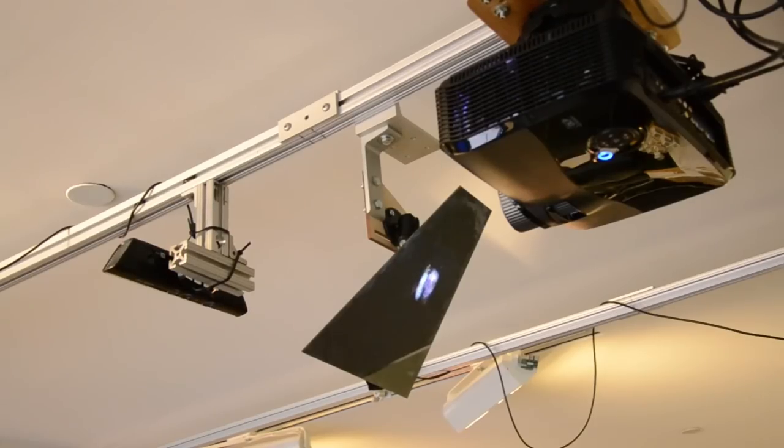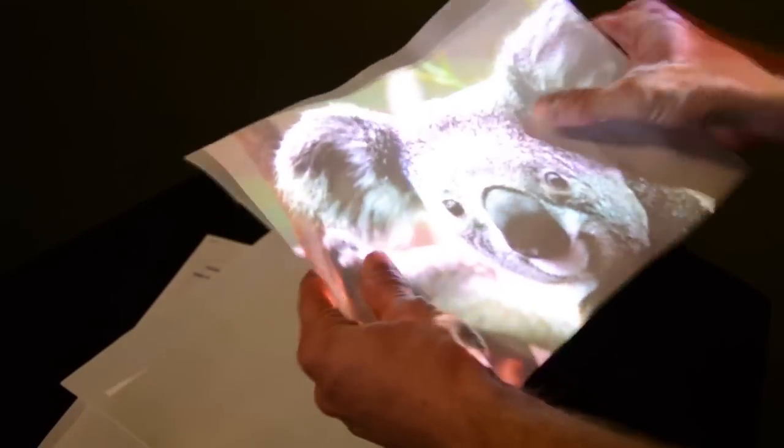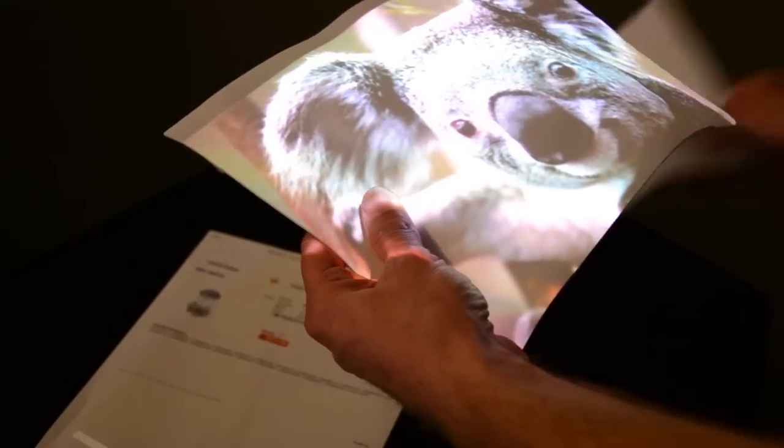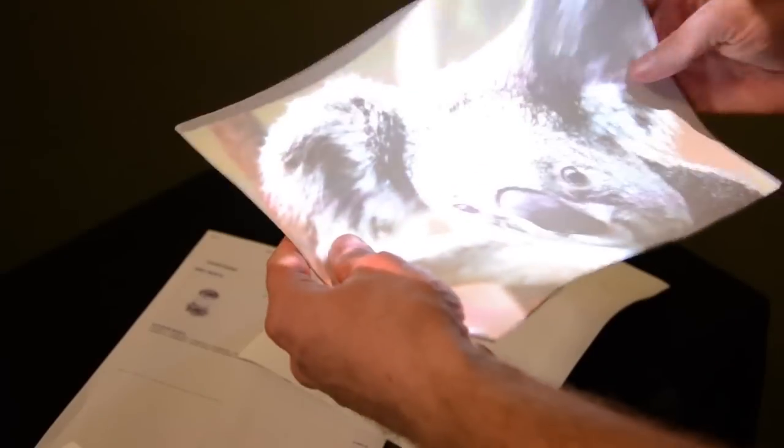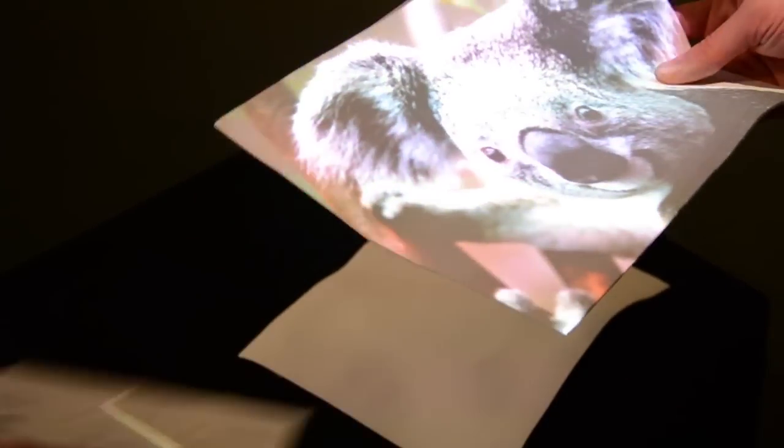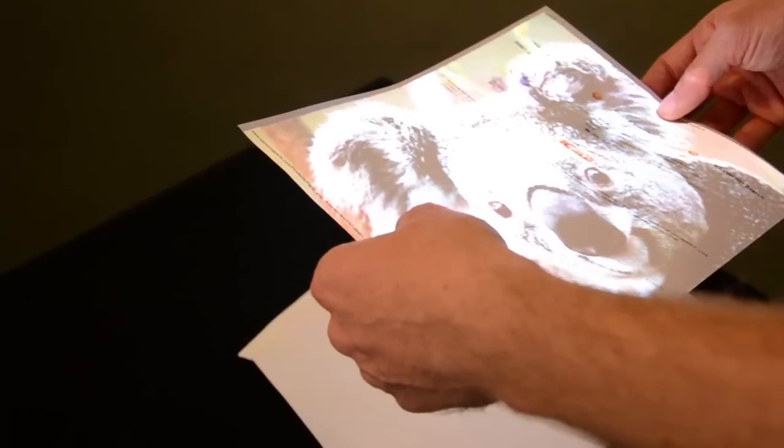It uses a Kinect camera and a projector to transform these flexible sheets into a deformable display. Most notably, projection surfaces do not need to be instrumented in any form, neither with visible markers or texture, nor with electronic components. Virtually any sheet at hand can be readily used for interaction.